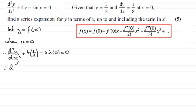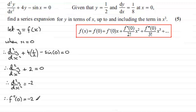So this simplifies to d²y/dx² and 4 times 1/2 is 2. Sine of 0 is 0, so you've just got +2 = 0. And from this we've got, therefore, d²y/dx² must equal -2. So that means that therefore f''(0) when x is 0 is equal to -2. So that's going to give us this term in here.